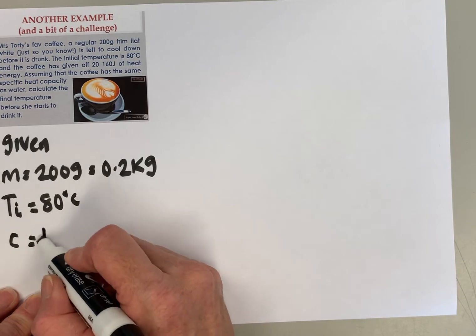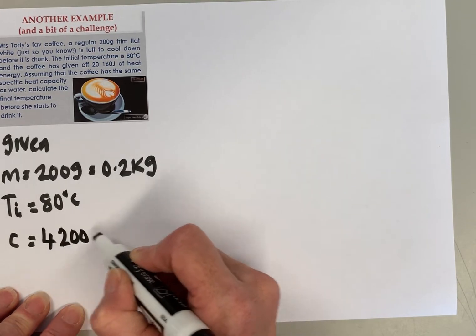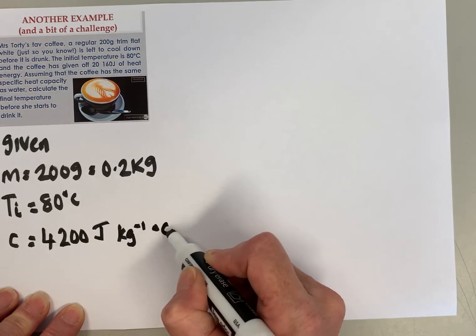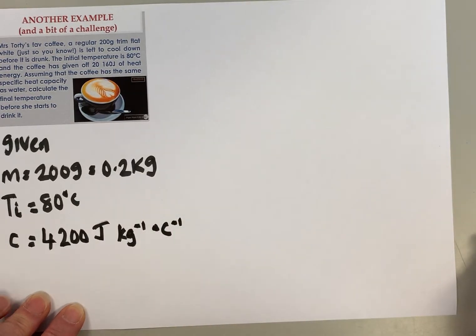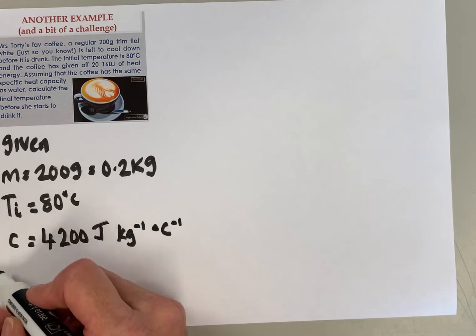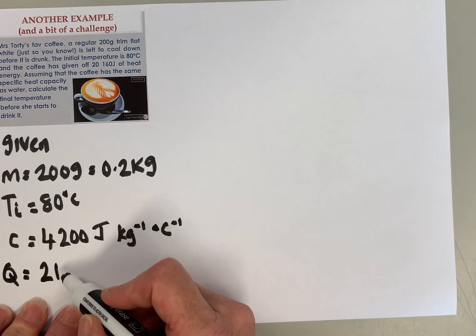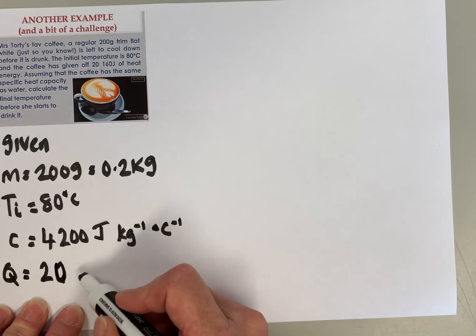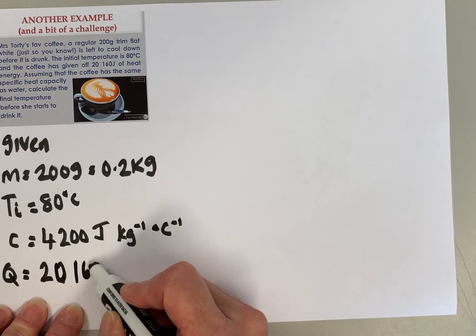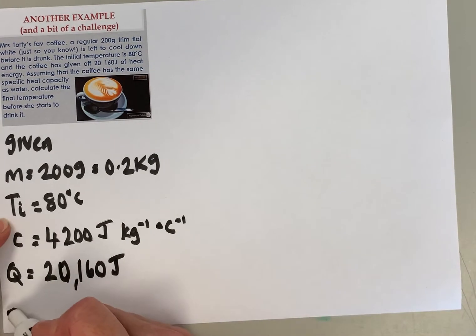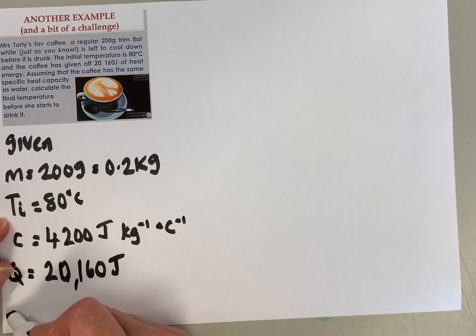The specific heat capacity of water is 4200 joules per kilogram per degree C, and the total heat added is 20,160 joules. So those are all the things that we're given.